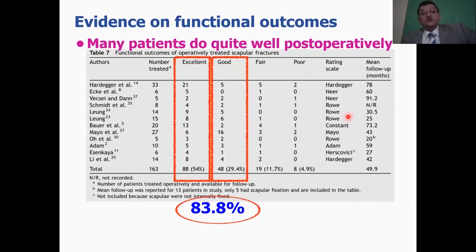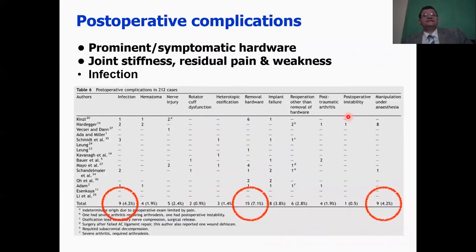Most of these patients do quite well post-operatively. We know that good to excellent results in surgical management of scapular fractures, when indicated, is close to 84%. What are the post-operative complication? 4% infection rate in this systematic review and problematic or prominent hardware in 7% that required removal and joint stiffness, residual pain that required medication anesthesia in 4% of the patients.